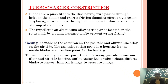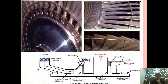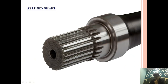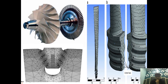A lashing wire passes through a hole in the blade and exerts a friction-damping effect on vibration. The lashing wire passes through all blades in shorter section groups of six blades — it is not continuous. If there are, say, one hundred blades, the lashing wire will be provided through six blades in a row, then again six, and so on in sections — not continuous. The main aim of the lashing wire is to prevent vibration of the blades during rotation.